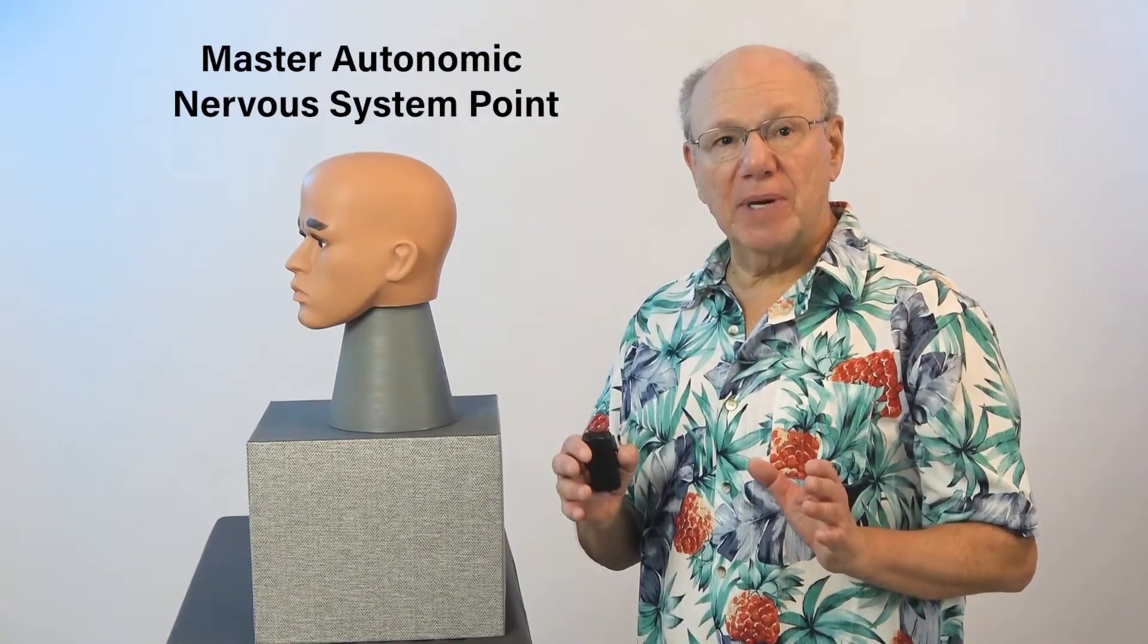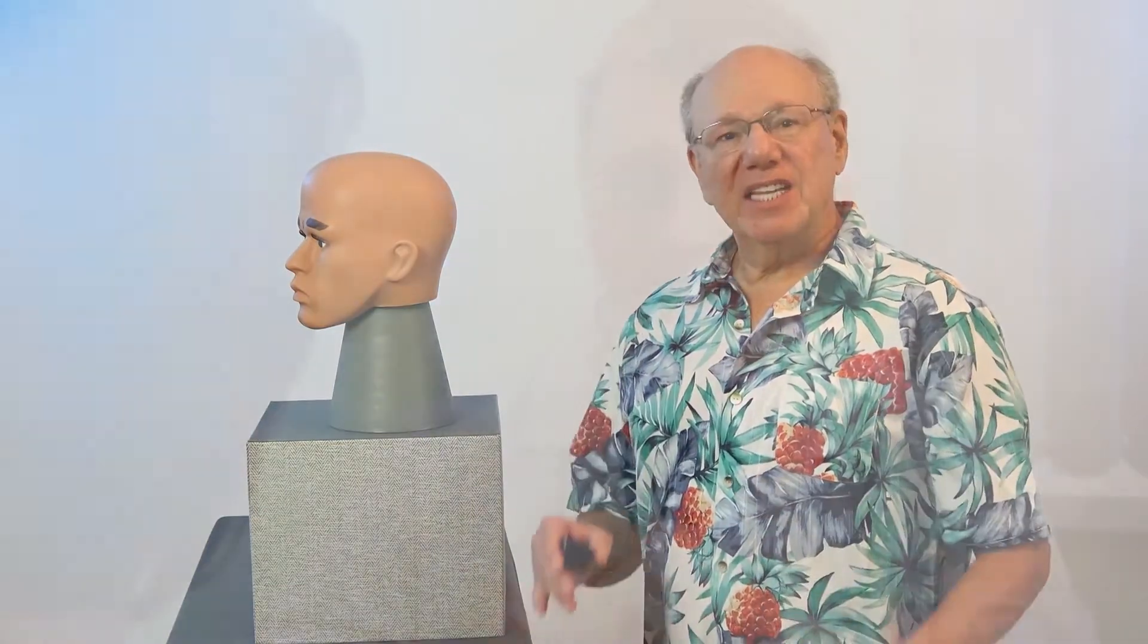The first point for vagus nerve activation is the Master Autonomic Nervous System Point. The Master Autonomic Nervous System Point you use to restore nervous system balance, reduce pain, improve blood circulation, and improve digestion.